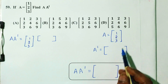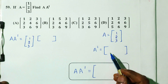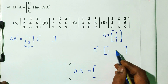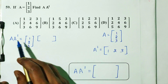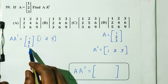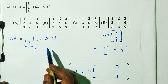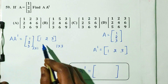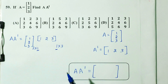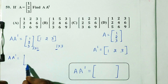If A is a column matrix (3 rows, 1 column), then A-dash (transpose) is a row matrix (1 row, 3 columns). We note that A is 3 by 1 and A-dash is 1 by 3. For multiplication A times A-dash, the inner dimensions match (1), so the result is a 3 by 3 matrix.